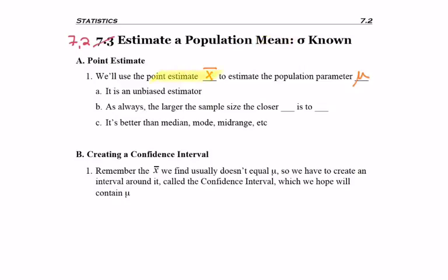Specifically, X bar as a point estimate is chosen because it's an unbiased estimator. That means basically X bar, half the time when we get sample averages, they're below the true population mean, but the other half of the time they're above the true population mean. So it's considered an unbiased estimator. And as always the case, the larger the sample size, the closer our X bar is to the mu that we're trying to obtain.